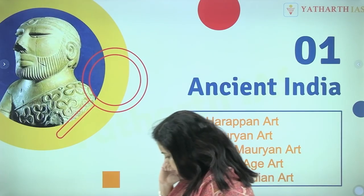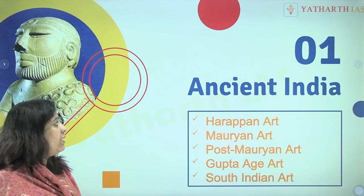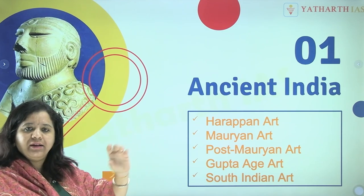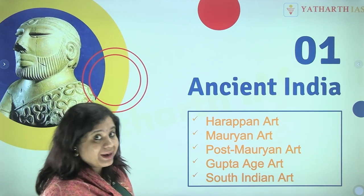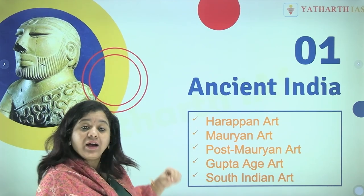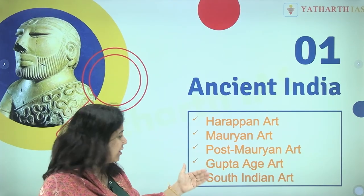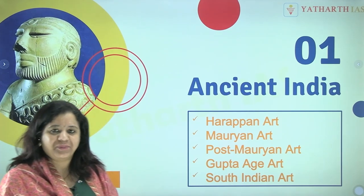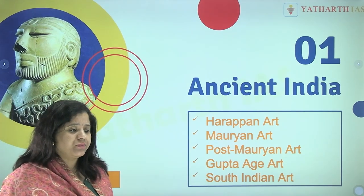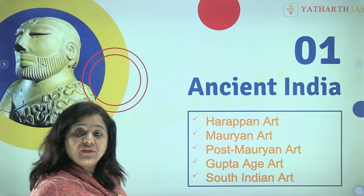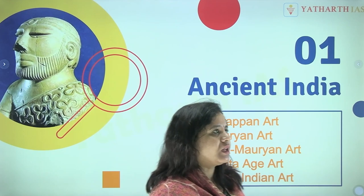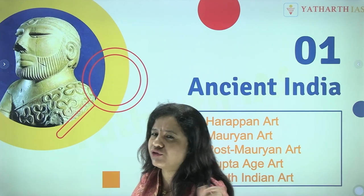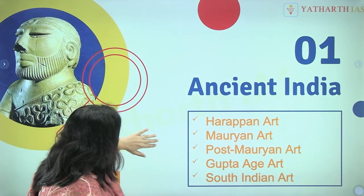The first unit, as I classified, is ancient India, covering Harappan, Mauryan, post-Mauryan, Gupta, and South Indian art. Connect the dots with what you learned about the Harappan civilization, what happened during that time, and what you have learned about the Indus Valley civilization.